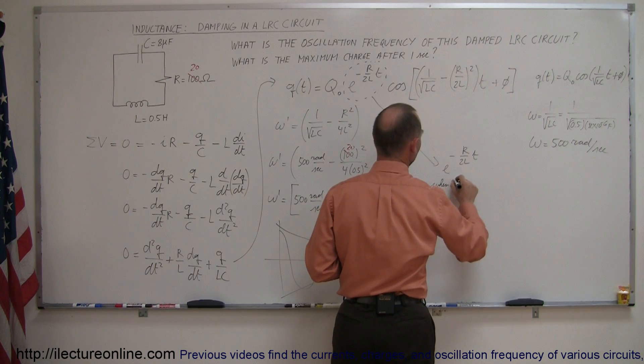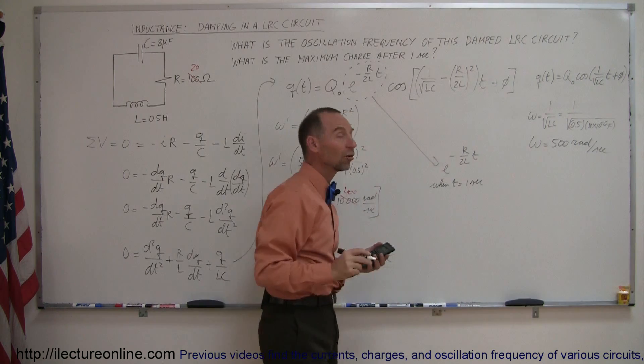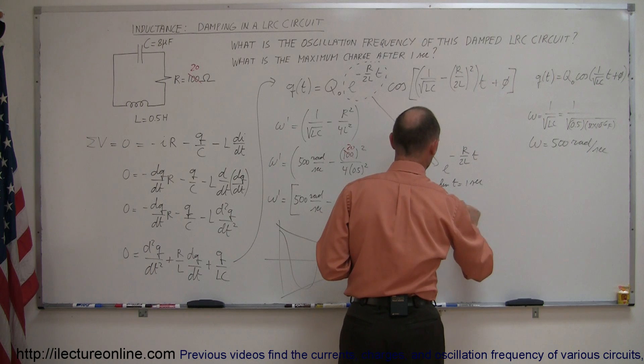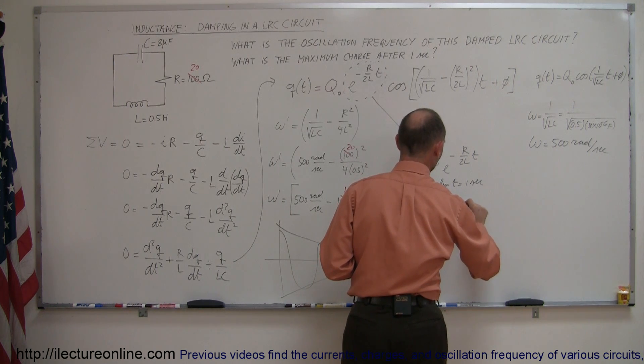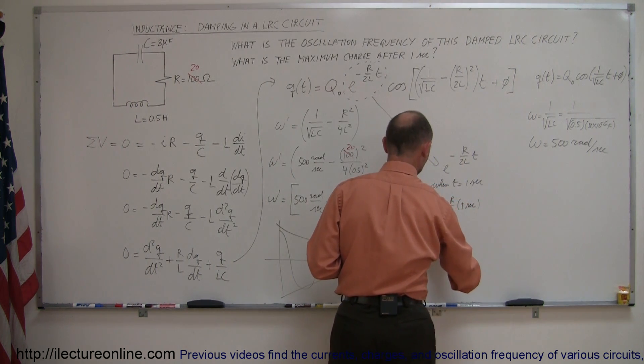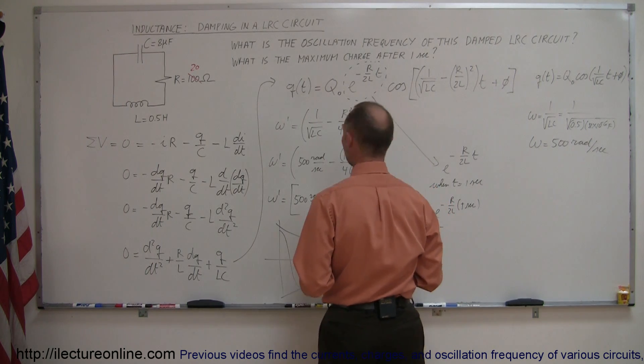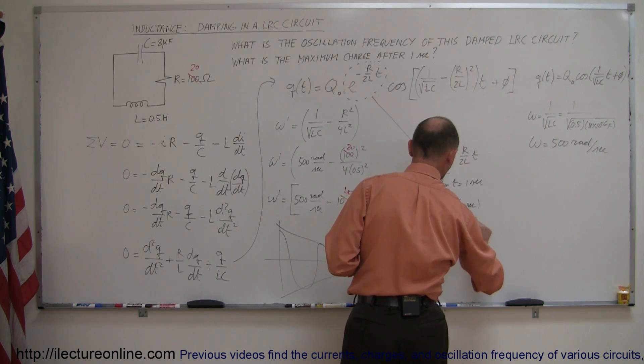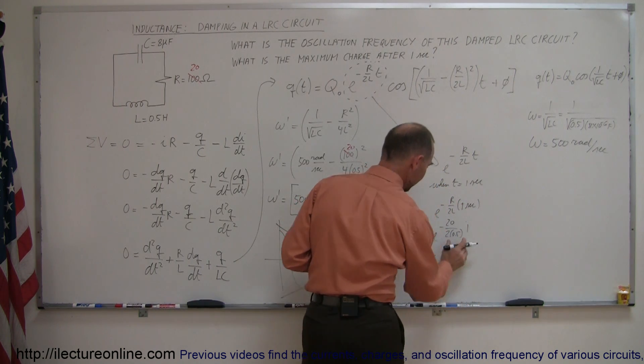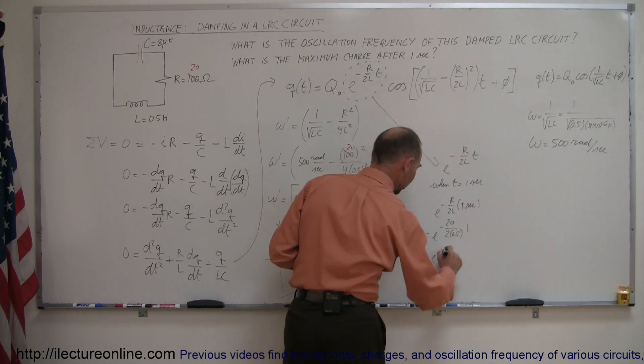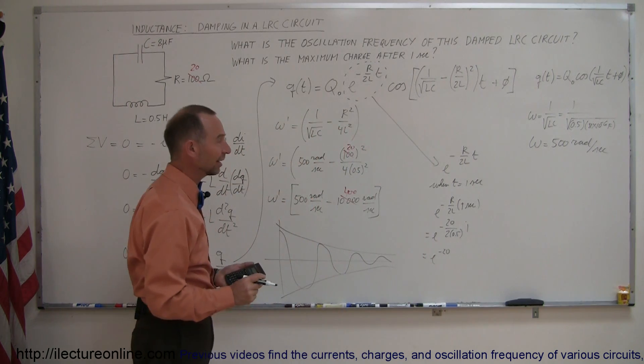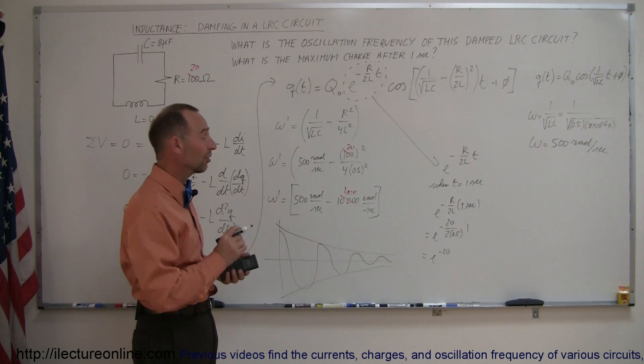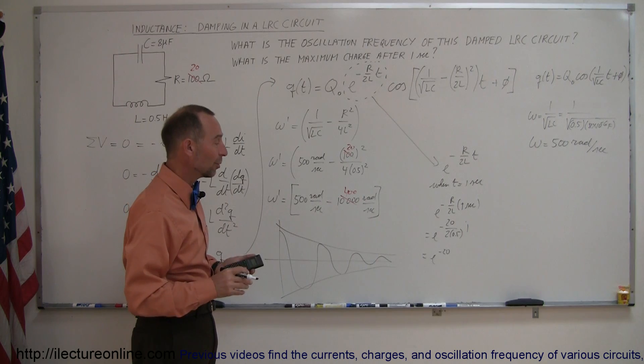So this term, when t equals one second, what is e^(-R/2L) equal to? Well, let's find out. So e^(-R/2L) times one second is equal to e to the minus, well R was 20 and 2L is 2 times 0.5 times one. And so that would be e to the, well that's equal to one. So that's minus 20. Wow, e^-20 is a very tiny number. So within one second, the oscillation would have virtually stopped. So it doesn't take much of a resistor for the oscillation to stop almost to zero.